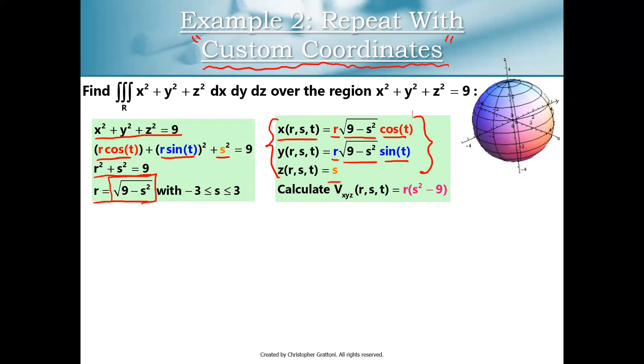So I have to calculate a different volume conversion factor using my x of r, s, t, y of r, s, t, z of r, s, t. I did this in Mathematica. I got r times s squared minus 9, so I did not do that calculation by hand. And let's look at our triple integral setup here.